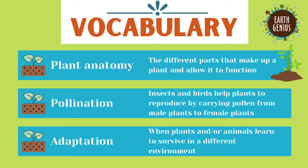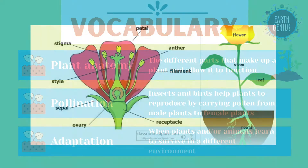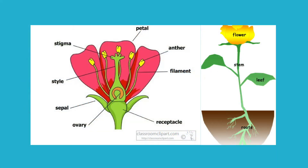Our first word that you can write down is plant anatomy. Plant anatomy is the different parts that make up a plant and allow it to function. Let's take a closer look at a plant's anatomy.